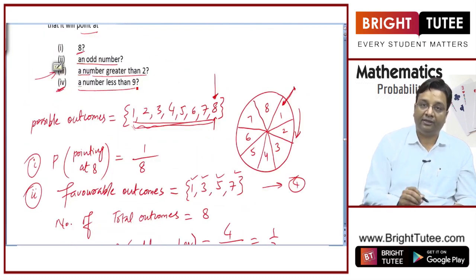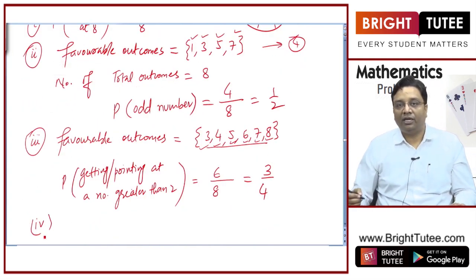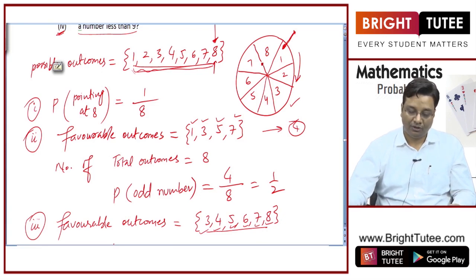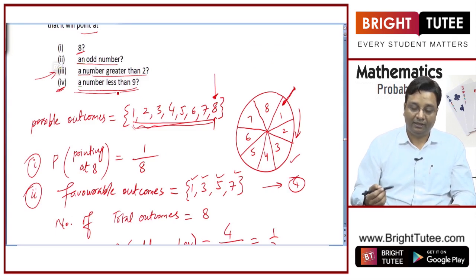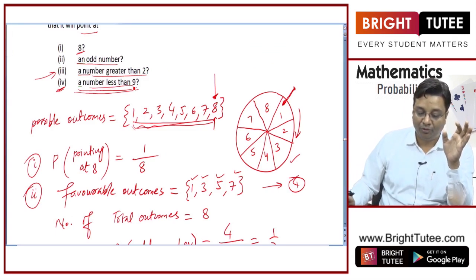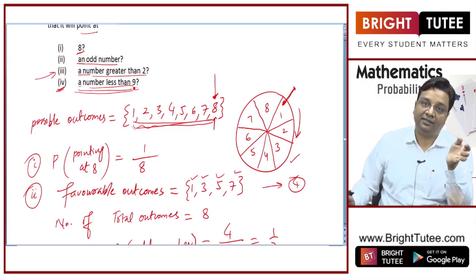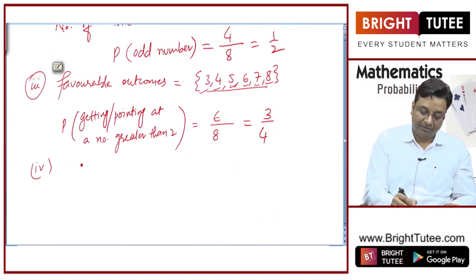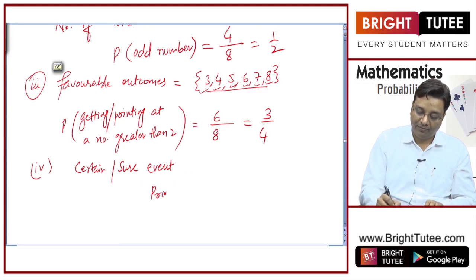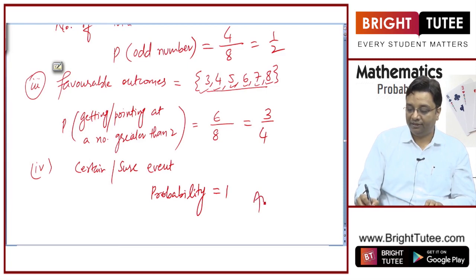What is the probability the arrow points at a number less than 9? All numbers on this wheel — 1 through 8 — are less than 9. It is impossible for the pin to point at a number greater than 8, so pointing at a number less than 9 is a certain event. Hence the probability is 1.